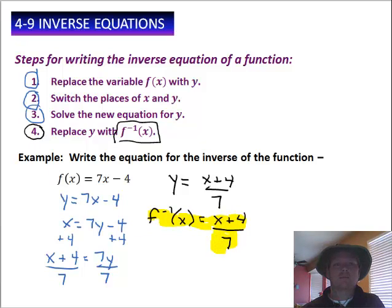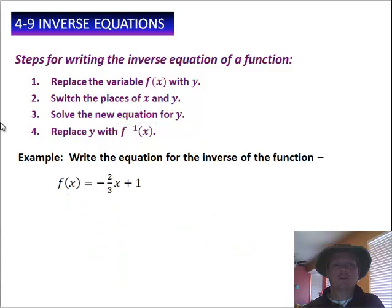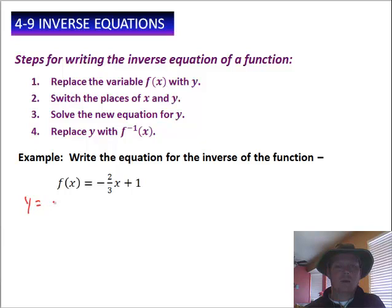Pretty simple, wasn't it? Let's look at another example. I'm just going to work a couple more examples and then turn you loose on your work. This one says to write the equation for the inverse of the function f of x equals negative 2 thirds x plus 1. So the first thing I'm going to do is replace the f of x with y, so y equals negative 2 thirds x plus 1. Then I'm going to switch the places of x and y, so x equals negative 2 thirds y plus 1.